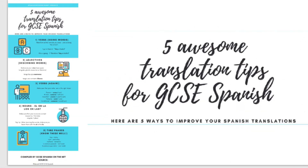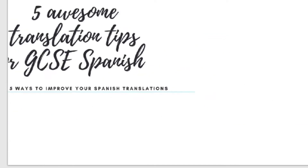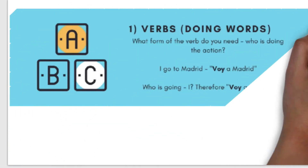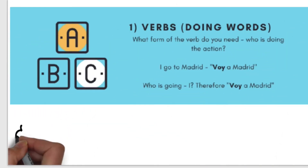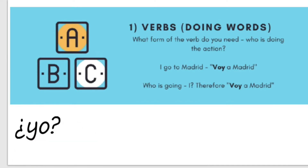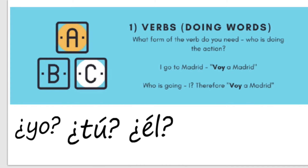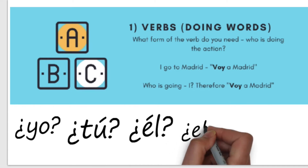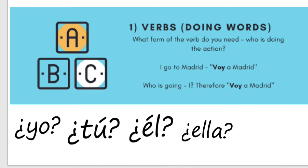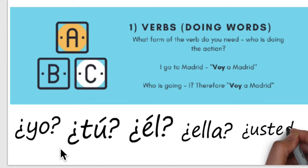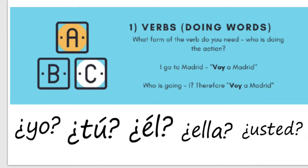Hello everybody — five awesome translation tips for GCSE Spanish. So let's go. First: verbs. What form of the verb do you need, and who's doing the action? Is it yo, tú, él, ella, or usted? In other words, is it I, you, he, she, or you? It's really important that you know who is actually doing the action of the verb.